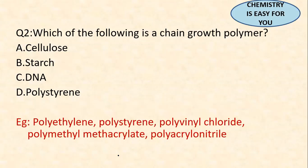The second question is: which of the following is a chain growth polymer? The answer is polystyrene. Other examples of chain growth polymers include polyethylene, polystyrene, PVC, and poly(methyl methacrylate).